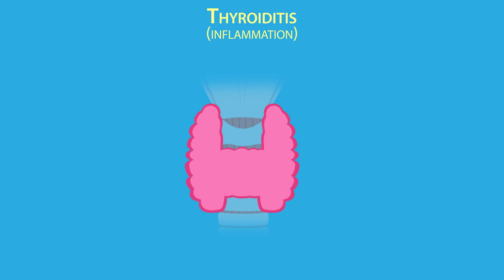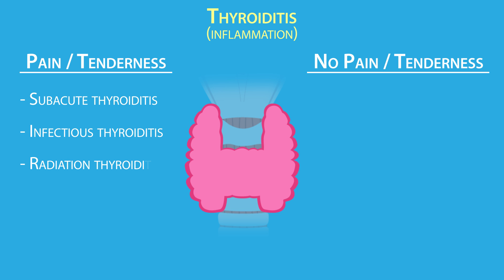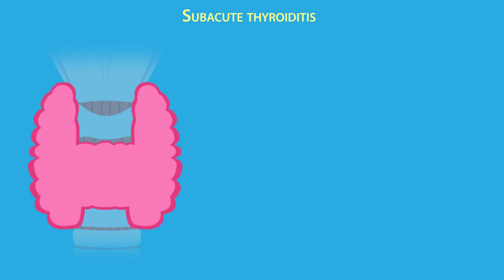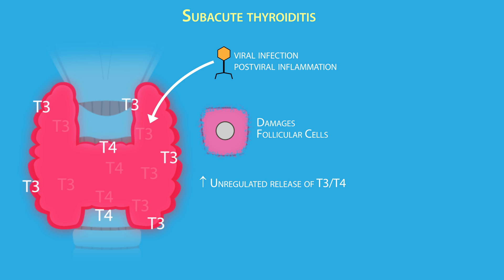Thyroiditis is another cause of hyperthyroidism, characterized by inflammation of the thyroid gland. It falls into two main categories: with pain and tenderness, and without. Thyroiditis with pain and tenderness includes subacute, infectious, radiation, and palpation thyroiditis. Subacute thyroiditis is typically caused by a viral infection or post-viral inflammation, damaging follicular cells and leading to the unregulated release of T4 and T3.